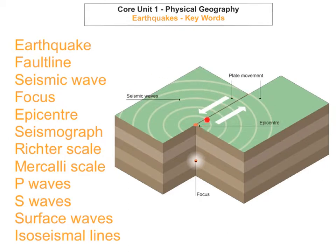The fault line is where the two plates are actually sliding past each other or in collision with each other. So in this diagram here the fault line would just be this line here. It's after the pressure and stress builds up and when the rocks actually slip, we call this line the fault line.